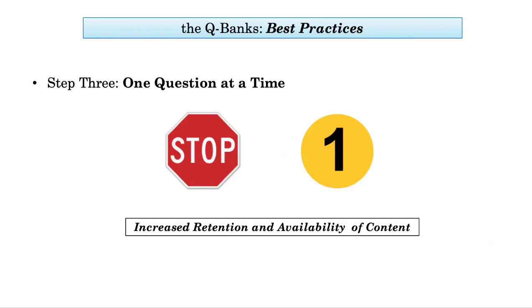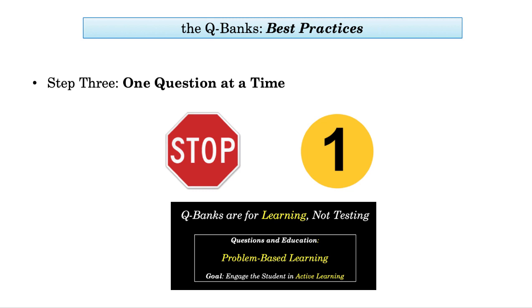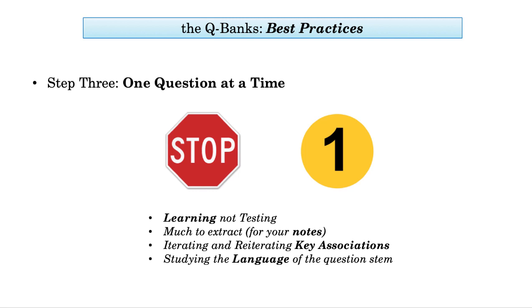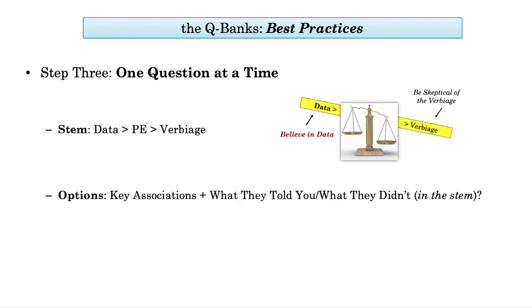Continuing on to the next step: I need to highlight the notion and importance of only one question at a time. This circles back to the previous principles — the QBanks are for learning, not testing. You have a tremendous amount to extract from each question. To reiterate: you'll still prioritize the question stem with data analysis playing the central role. In questions where you are uncertain of a correct answer, you will still look at the options and ponder the typical associations.